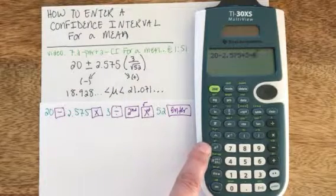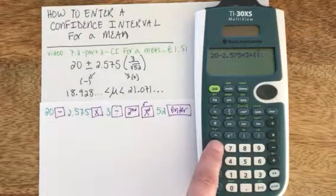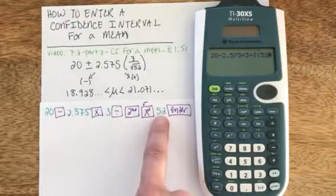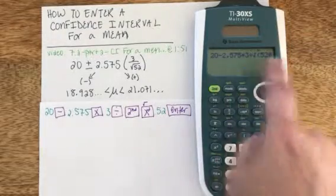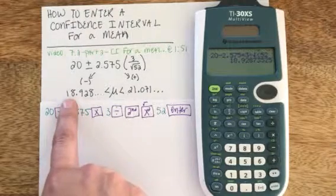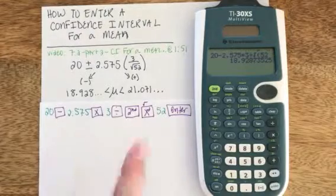And now I can hit 52. I do not need to enter a close parenthesis to end that off, I can just hit enter and I get the lower bound on my confidence interval of 18.92, etc.